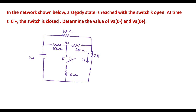In the network shown below, a steady state is reached with the switch K open. At time t equal to zero plus, the switch is closed. Determine the value of va(0-) and va(0+). Here we have va as the node voltage, and we are supposed to find va when t is equal to zero minus and t equal to zero plus. It is stated that when the switch was open, the circuit had reached steady state.